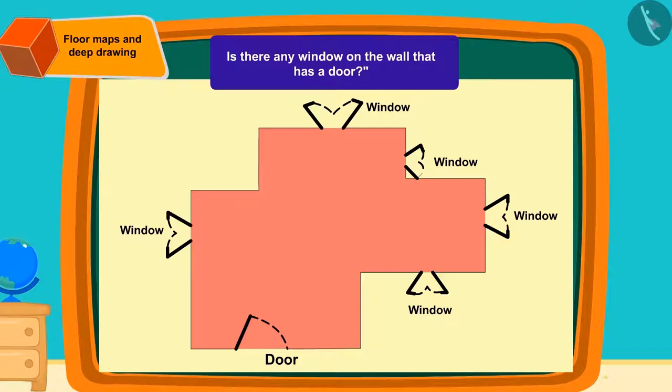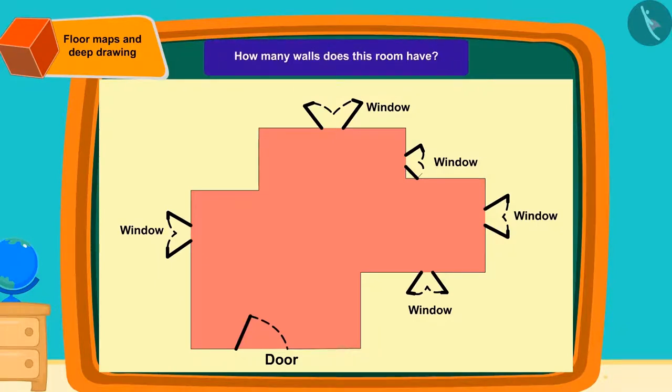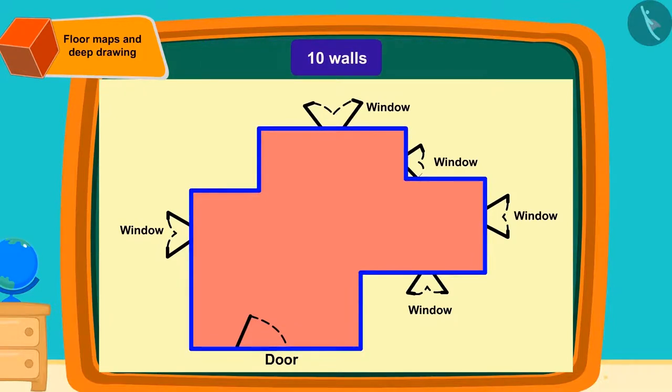Is there any window on the wall that has a door? Exactly! There is no window in the wall where the door is. How many walls does this room have? Right! This room has ten walls.